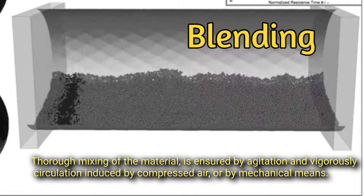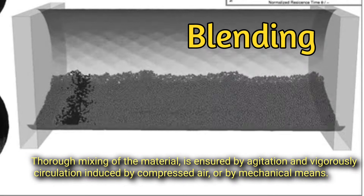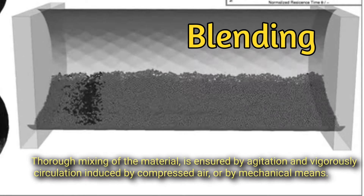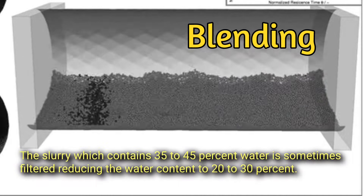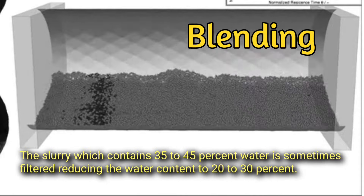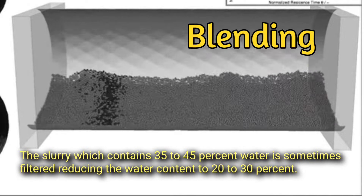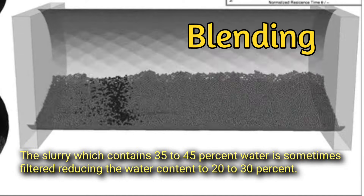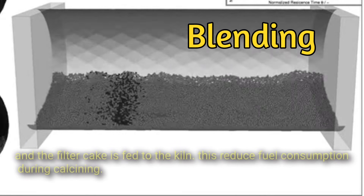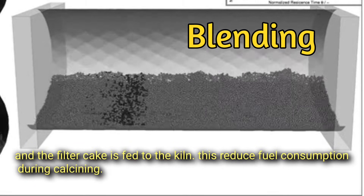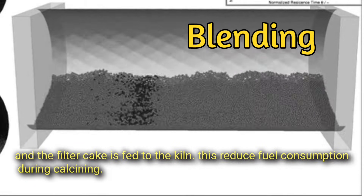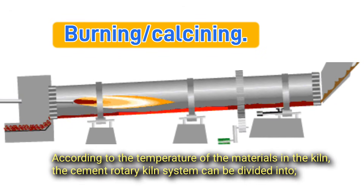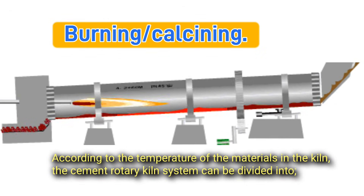Blending: thorough mixing of the material is ensured by agitation and vigorous circulation induced by compressed air or by mechanical means. The slurry, which contains 35 to 45 percent water, is sometimes filtered, reducing the water content to 20 to 30 percent, and the filter cake is fed to the kiln. This reduces fuel consumption during calcining.